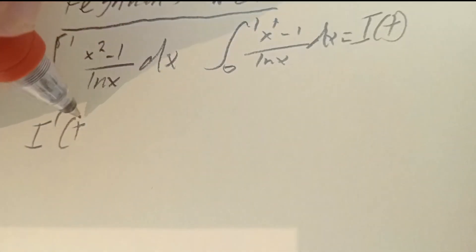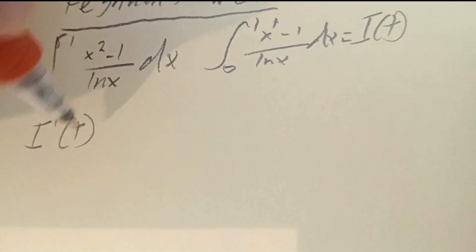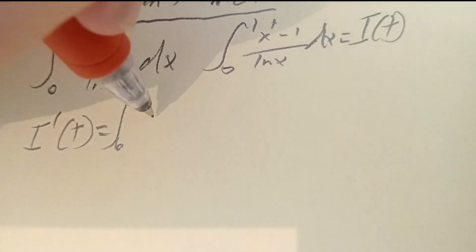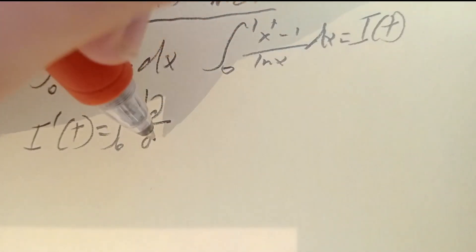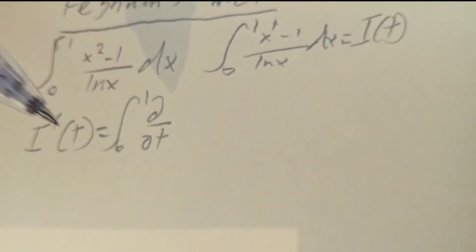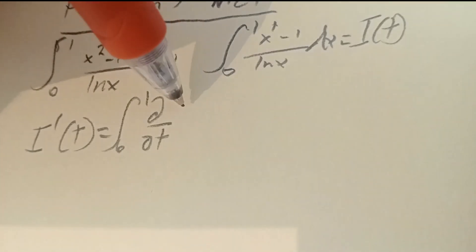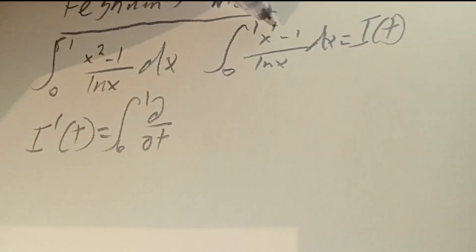The magic is we take the partial derivative with respect to our parameter t. I'(t) is equal to the integral from 0 to 1. The partial derivative can go inside the integrand because it's independent of x — t is not a function of x, or vice versa.